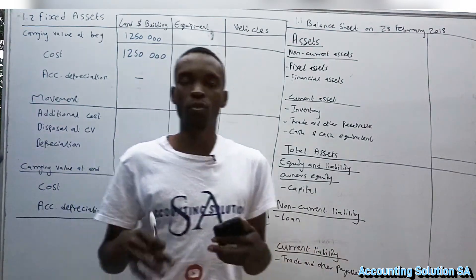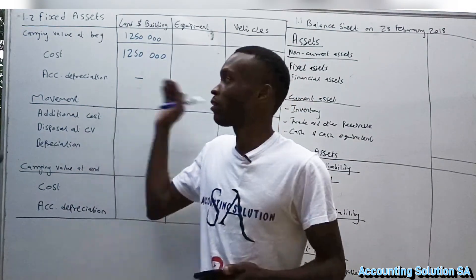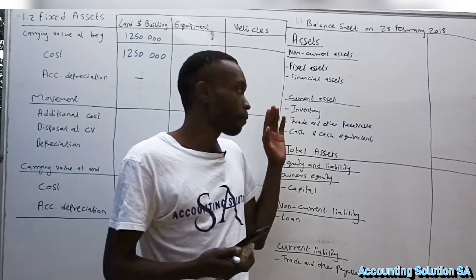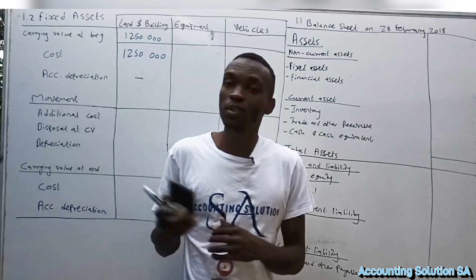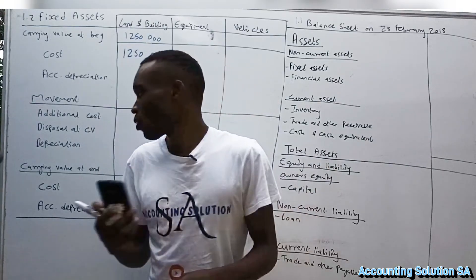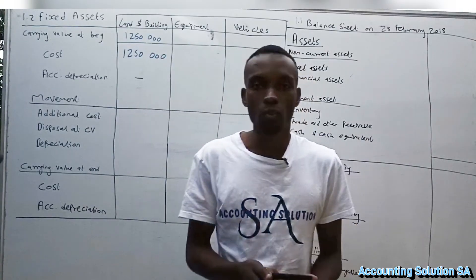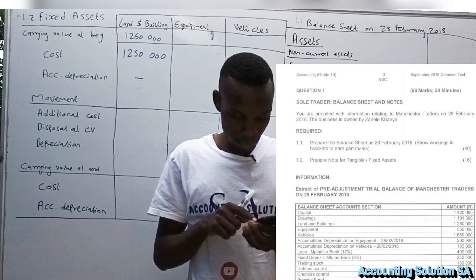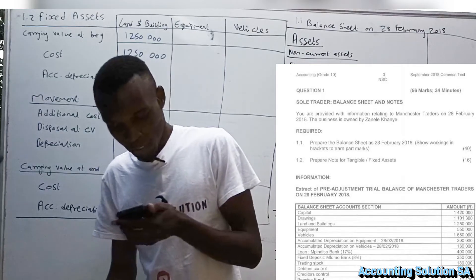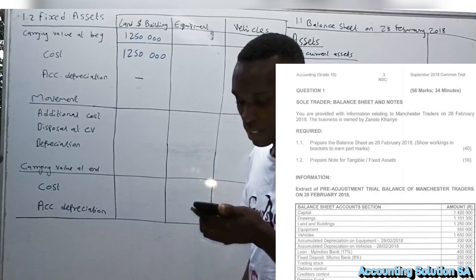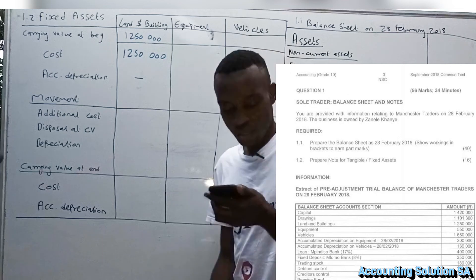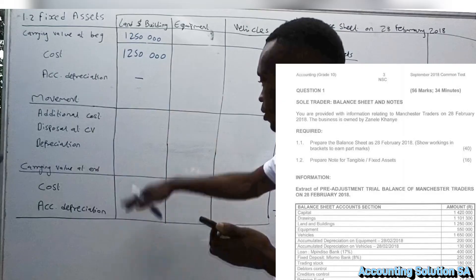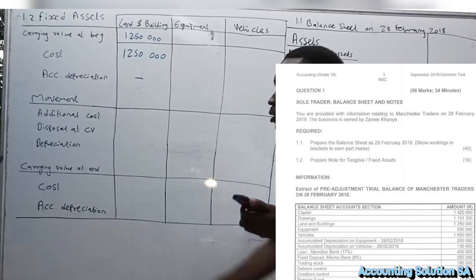In today's video we are going to prepare a fixed asset note, and then in the next part we are going to do a balance sheet. We have to complete our fixed assets first before we go to the balance sheet because we are going to use the totals that we get. So let's check our question paper — section 1.2 says prepare notes for tangible assets. The balance sheet will be done on a separate video.